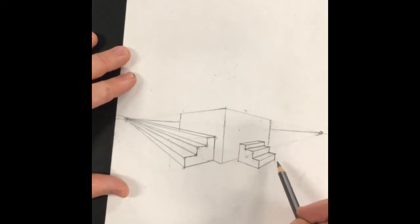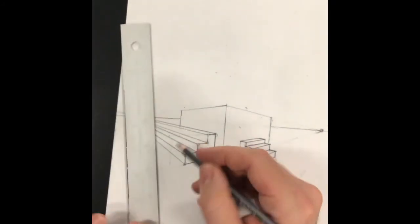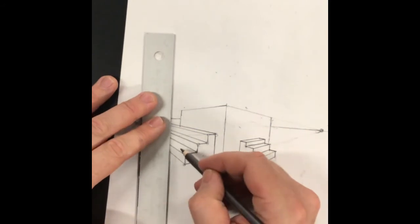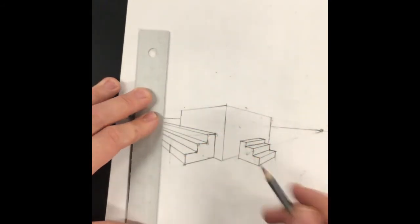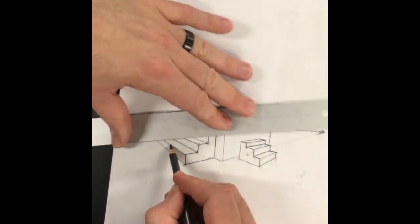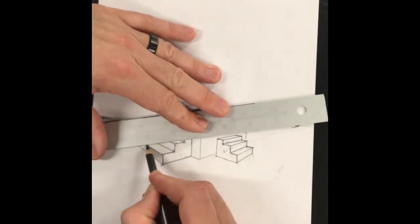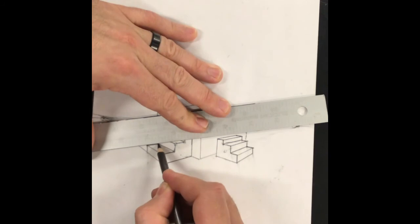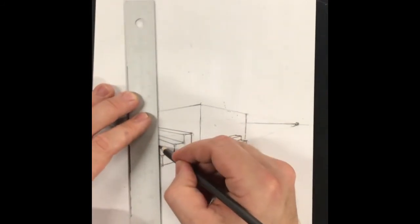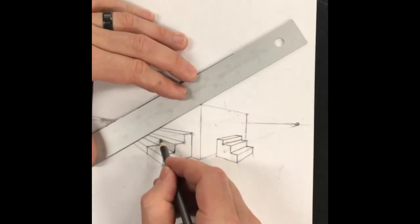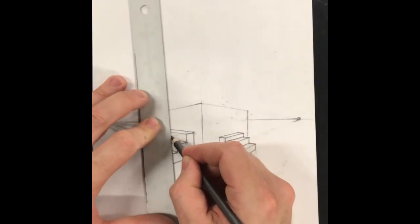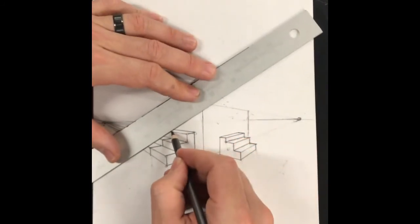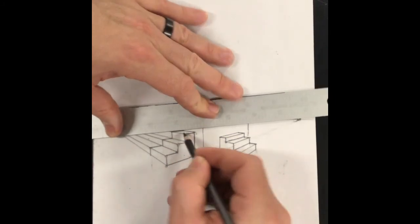So what we can do to do that is pick a point where you want your rise to be. How about right there? Vertical line. And I'm going to walk it up the stairs using my far vanishing point. Cut across, vertical, cut across to the vanishing point, vertical, cut across to the vanishing point. And there we go, we have our stairs.